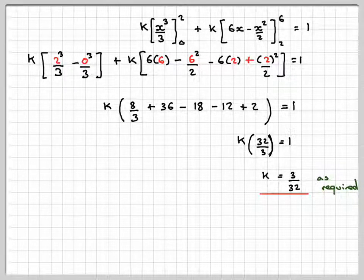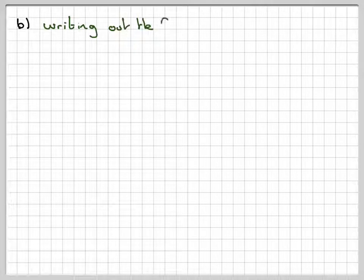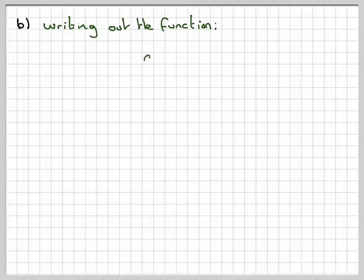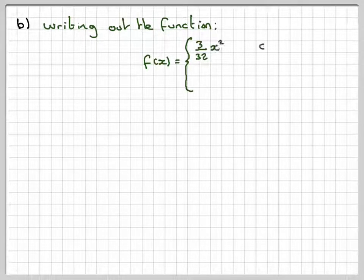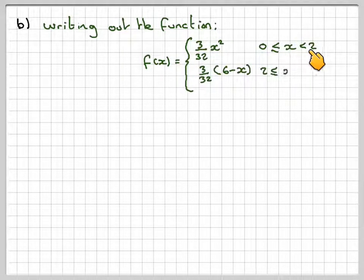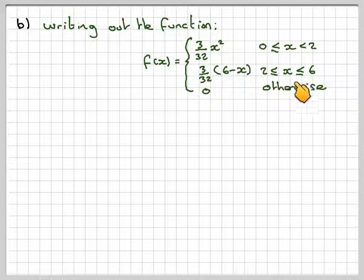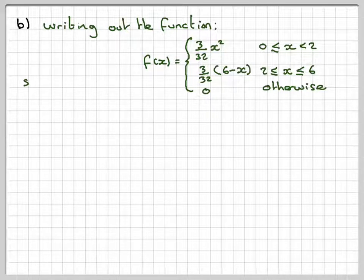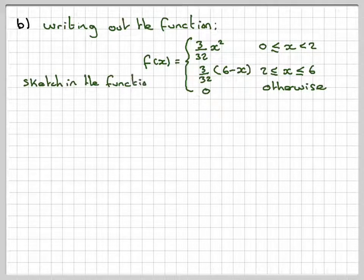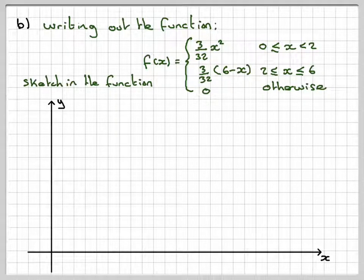The next part is to sketch the function. So if you write out the function properly now with the value of k in, it will be 3/32 x² between 0 and 2, 3/32(6-x) between 2 and 6, and 0 otherwise. Making the function, so draw yourself a set of axes.